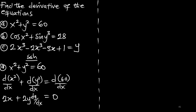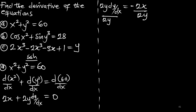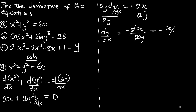So we have 2y · dy/dx equal to negative 2x. Dividing both sides by 2y, we get dy/dx equals negative 2x over 2y, which simplifies to negative x over y. So the derivative for this function is dy/dx = -x/y.